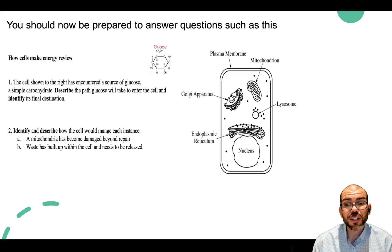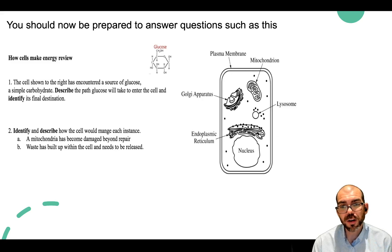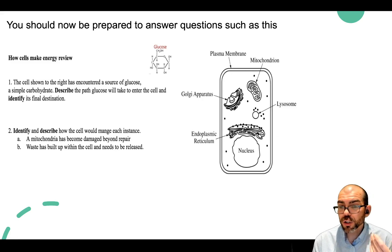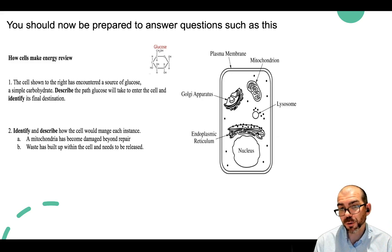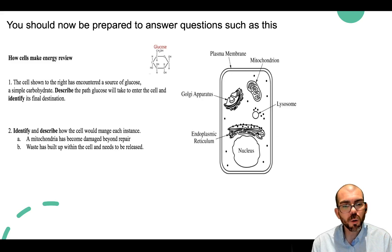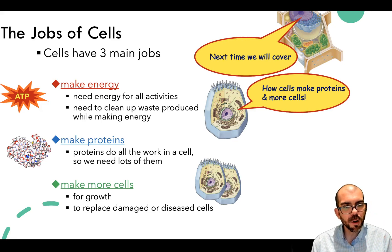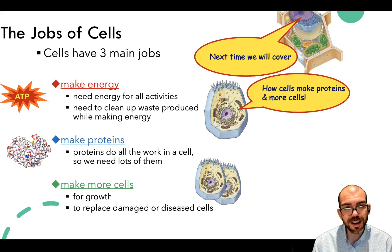This lecture has prepared you to answer questions such as: given a cell diagram where the cell has encountered a source of glucose, describe the path glucose will take to enter the cell and identify its final destination. Could you identify every organelle glucose encounters from entry to being broken down as ATP? Could you describe how the cell would manage a damaged mitochondria or release built-up waste? Today we covered how cells make energy. In part two of cellular structure and function, we will look at how cells make proteins and how cell organelles are used to make more cells.